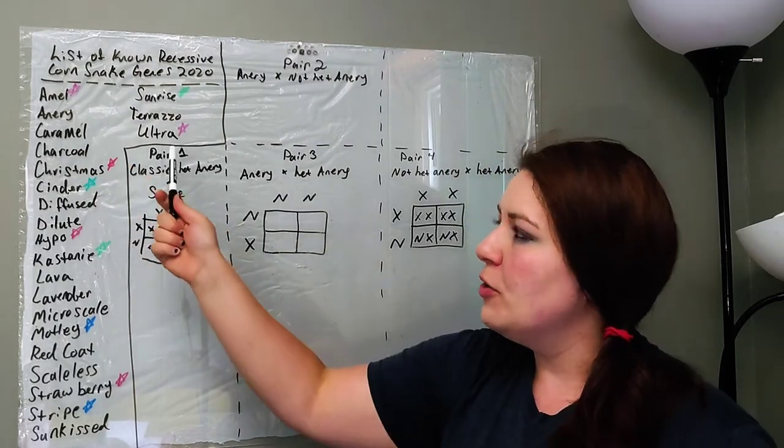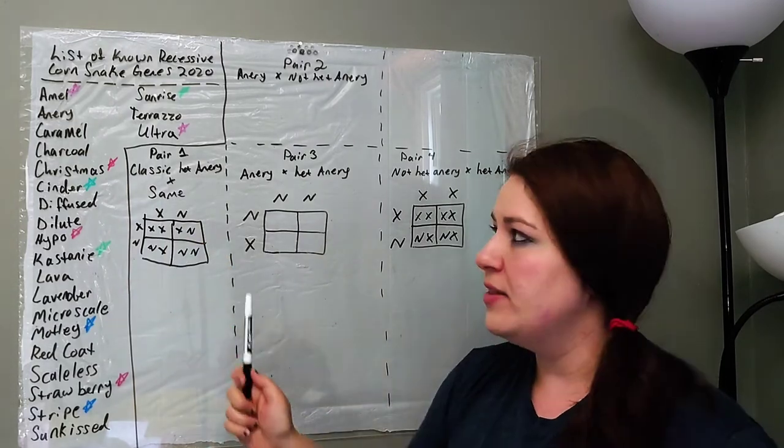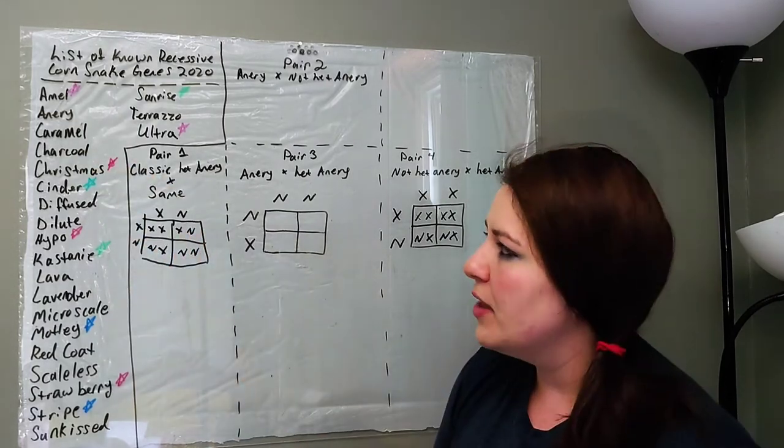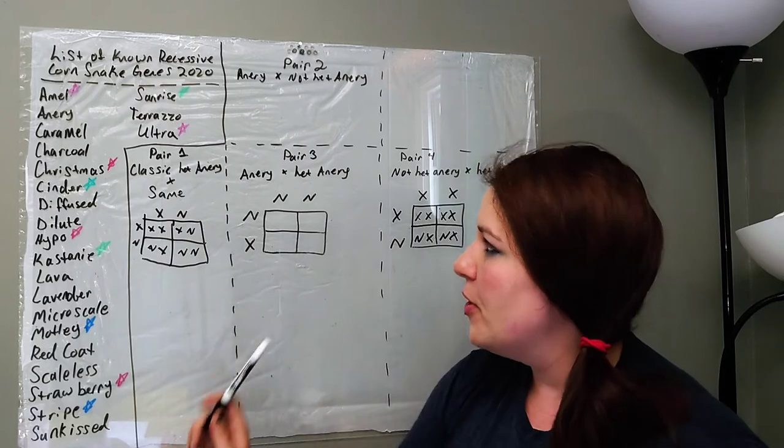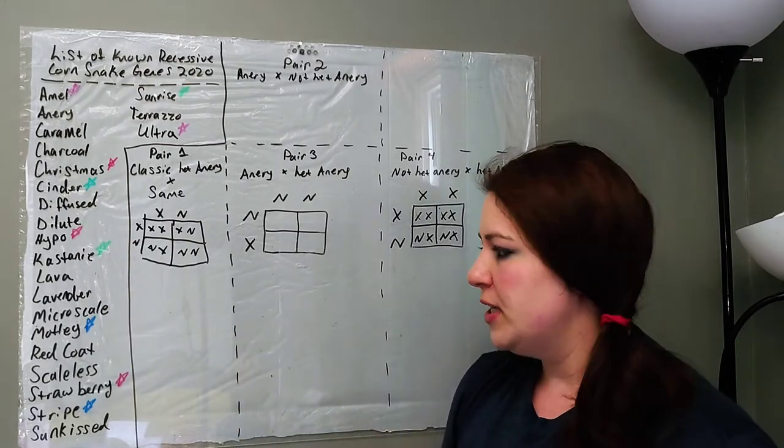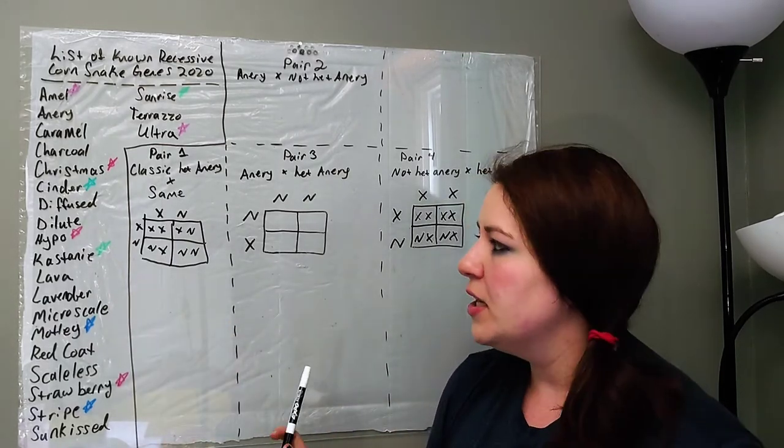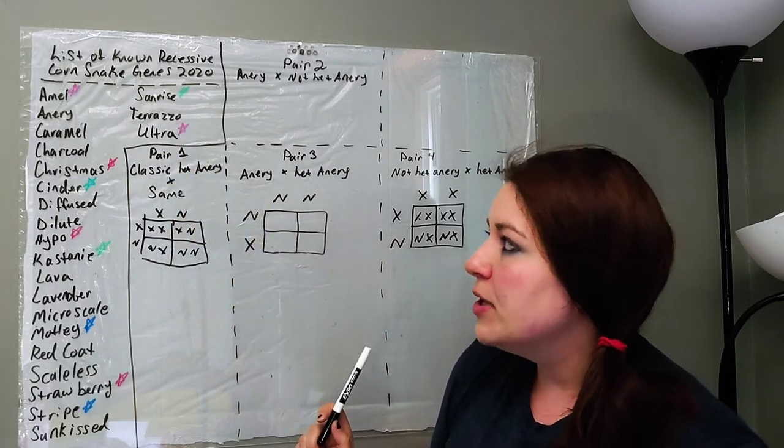So, Amel and Ultra, I mentioned in the last video, can work together. Christmas, Hypo, and Strawberry can all work together. Stripe and Motley can work together. Castagna and Sunrise can work together.